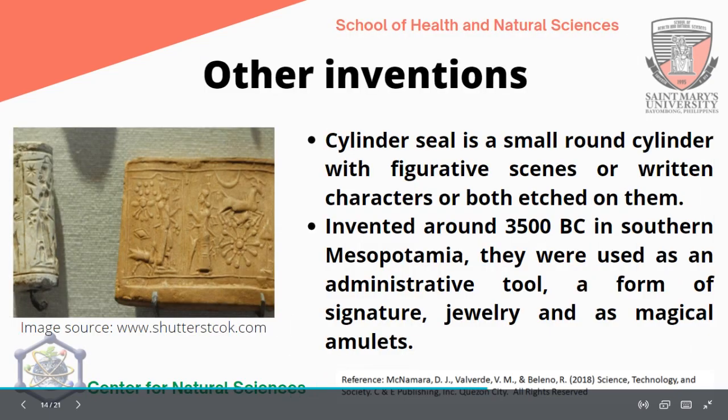Other inventions of the Sumerian civilization include the cylinder seal — a small round cylinder with figurative scenes or written characters, or both, etched on them. Invented around 3,500 BC in southern Mesopotamia, they were used as an administrative tool, a form of signature jewelry, and as magical amulets — very important for record keeping and also for magical purposes, as they believed in the power of amulets.